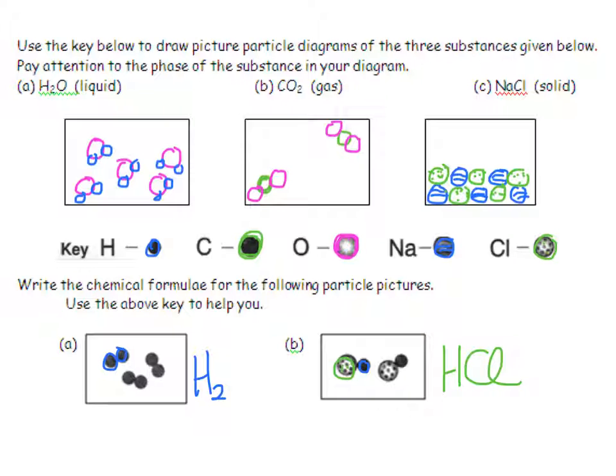These particles look fairly far apart, so I could say they were a gas. These ones I could say were either a gas or a liquid. And I might even get away with hydrogen being a liquid because they're quite close together. But I do know that hydrogen is a gas.